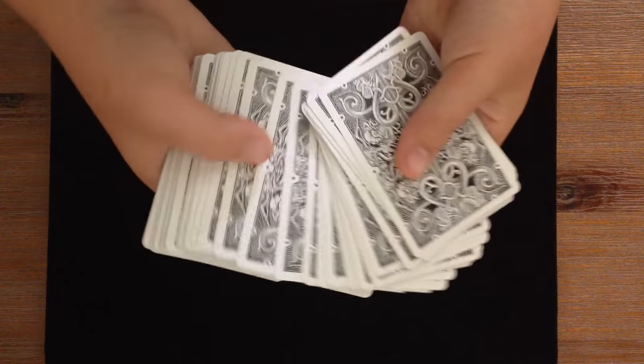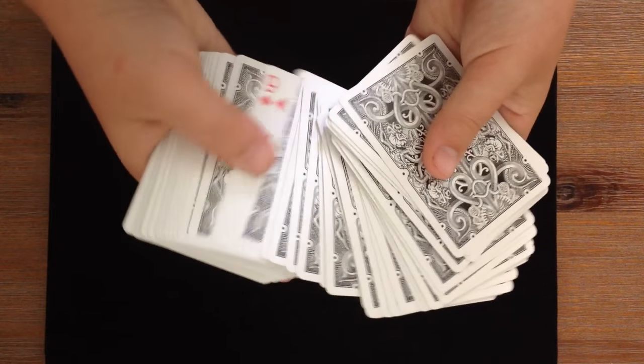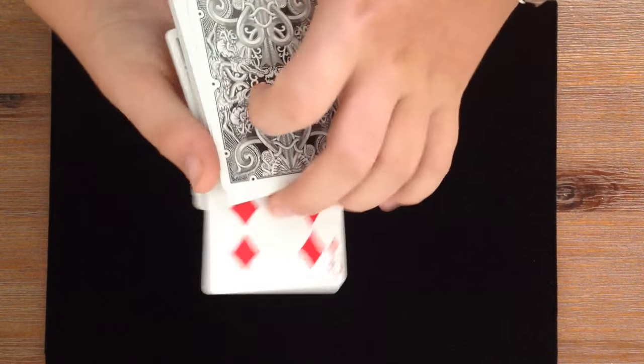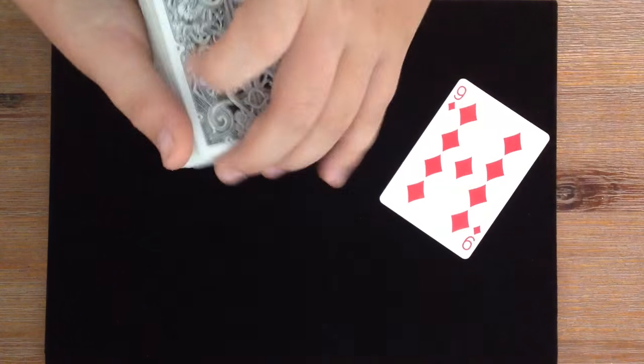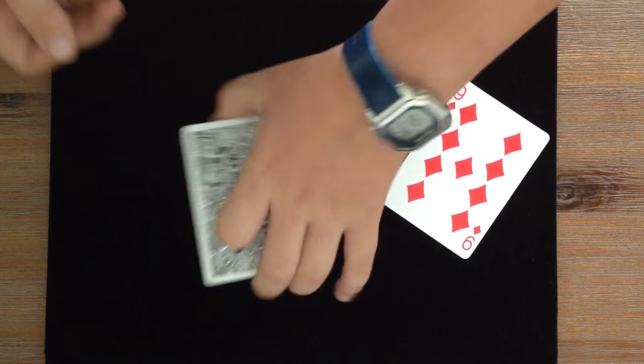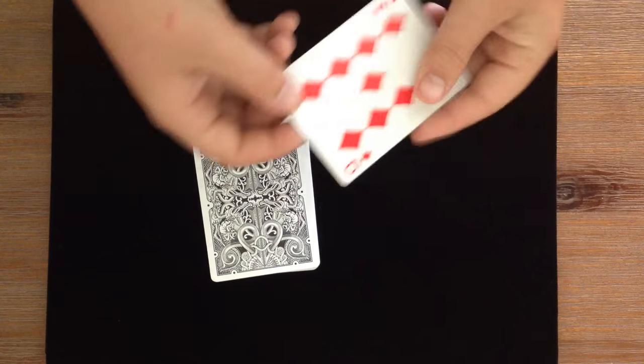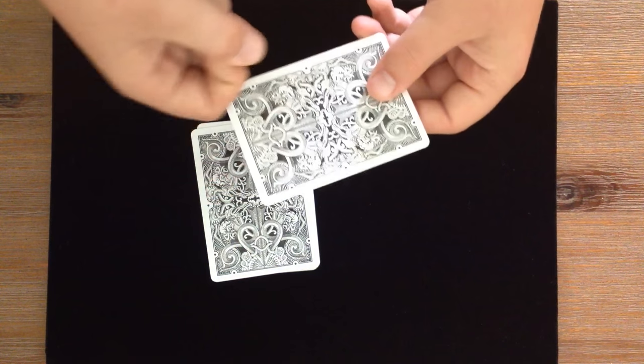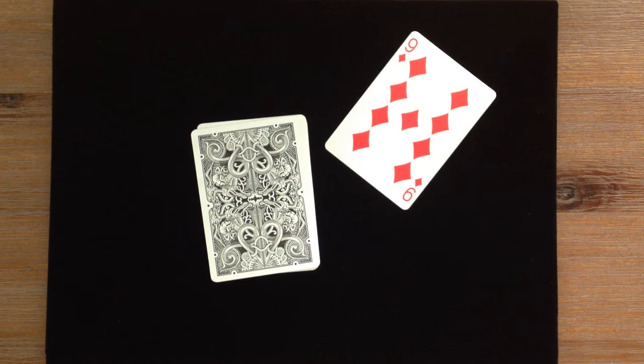And if you look really closely, you will actually find that your card, the nine of diamonds, was the only faced-up card in the center of the deck. And you saw me place it in face down. That's the trick, guys. I hope you've enjoyed. Make sure you stick around for the tutorial.